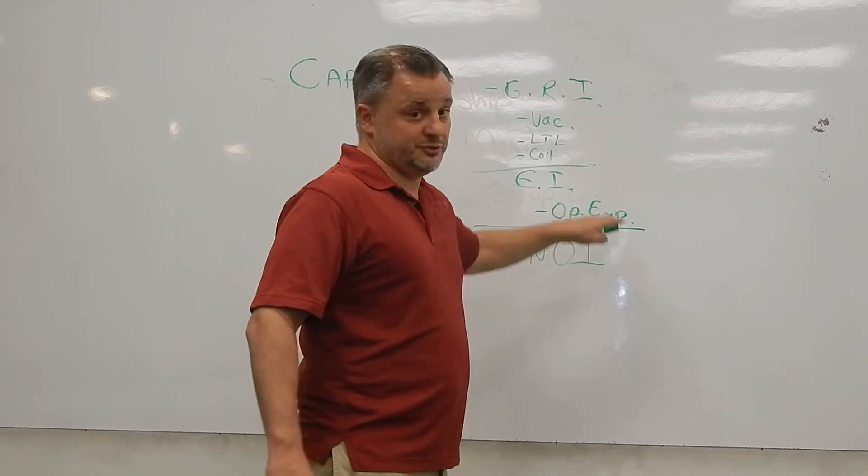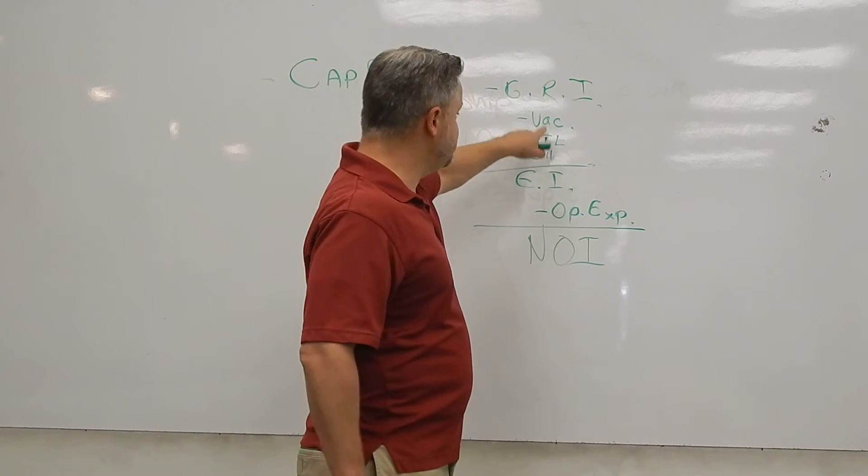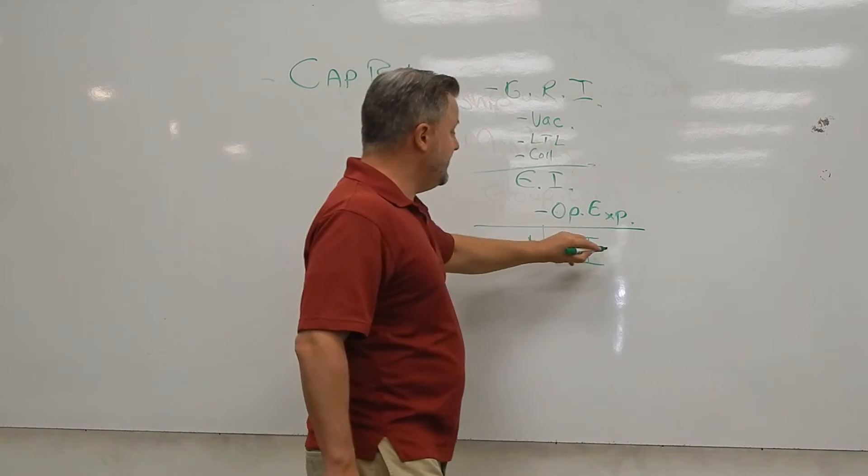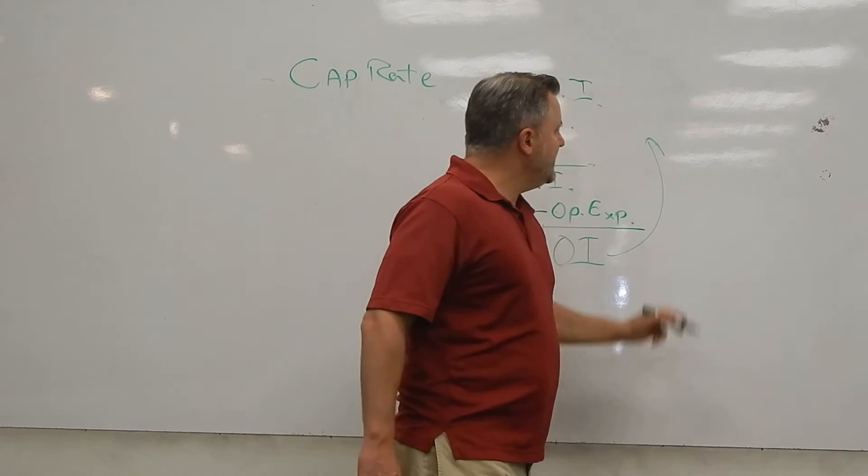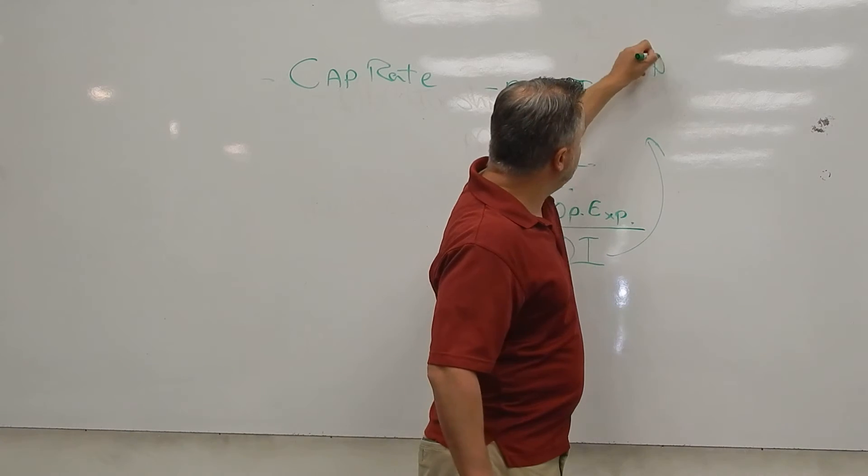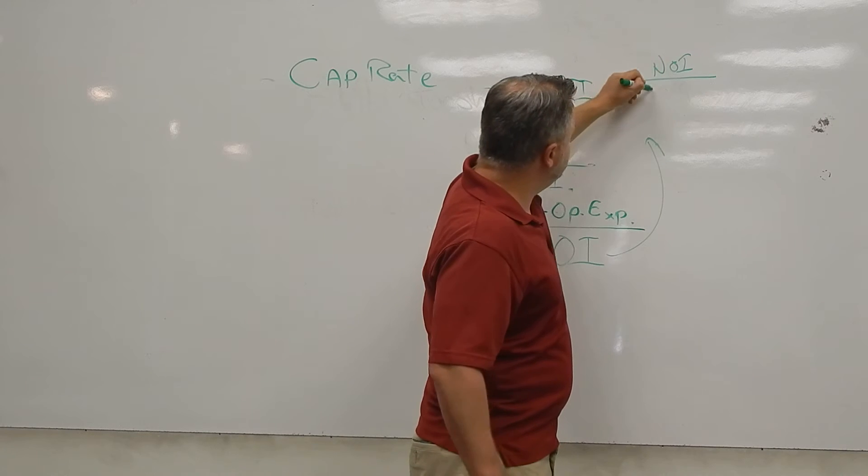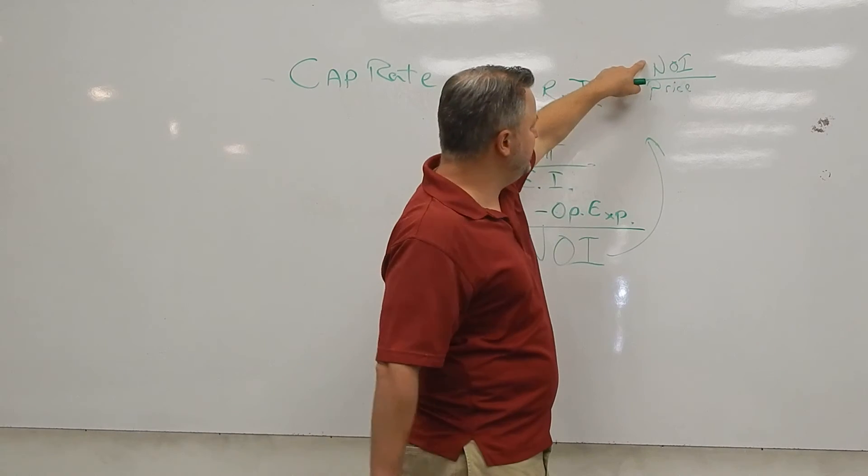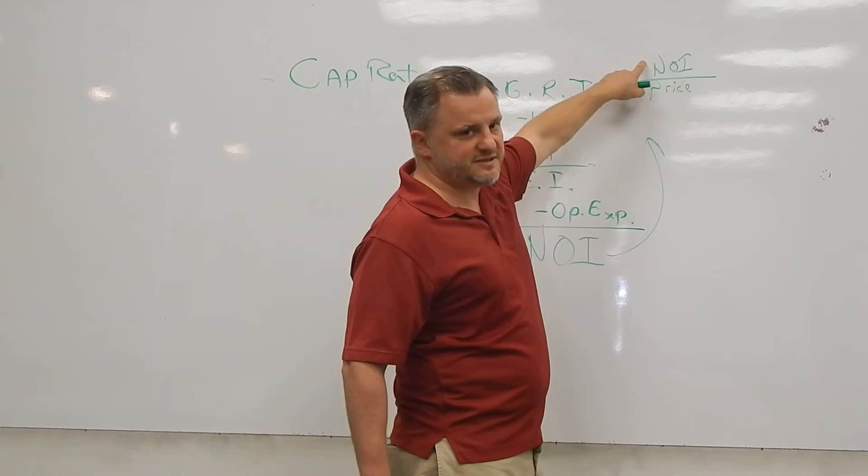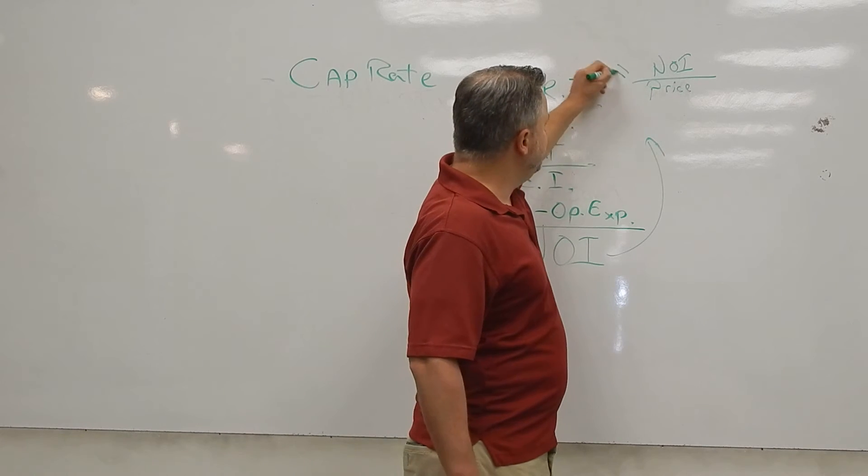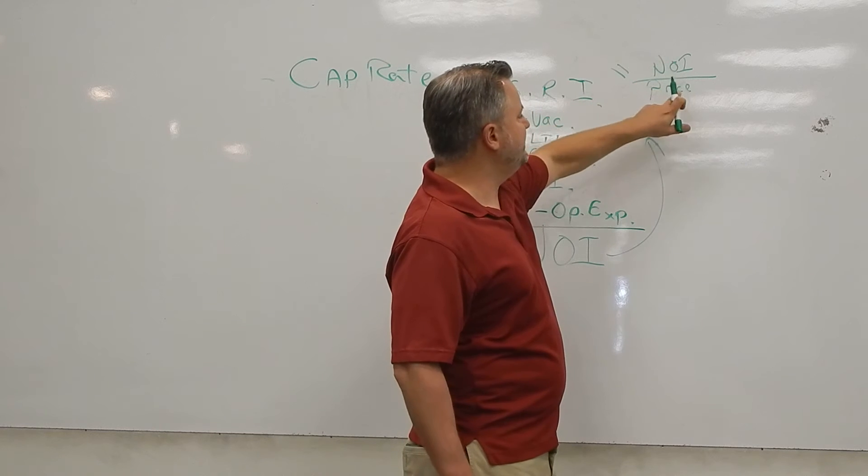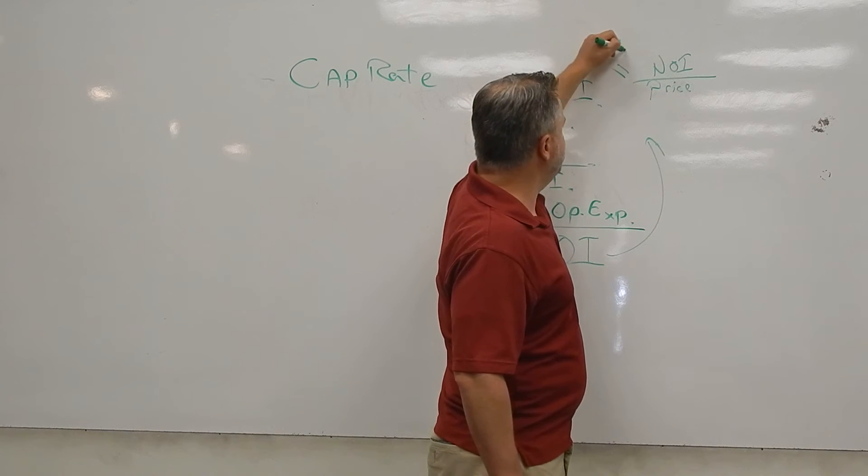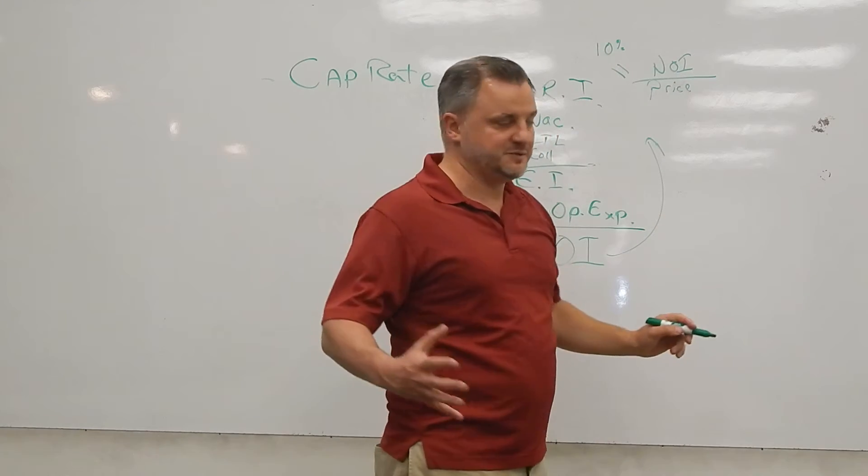You want to calculate this on your own. The reason for that is you want to put your own operating expenses in, your own knowledge in the market on vacancy and loss to lease and things like that. Run through this on your own. You take the NOI and you divide it into the price of the property. If I have a net operating income of $100,000 a year and a price for a property of a million, the cap rate, this NOI divided by the price equals the cap rate, my cap rate is 10%. If I'm at 100K and my price is a million, that's what that is.